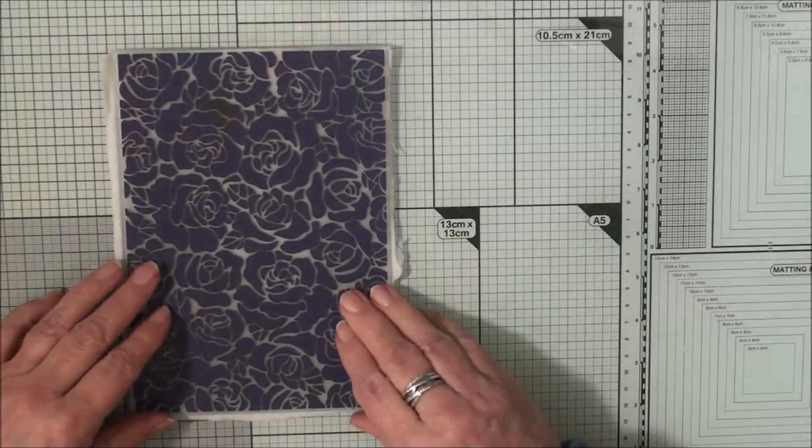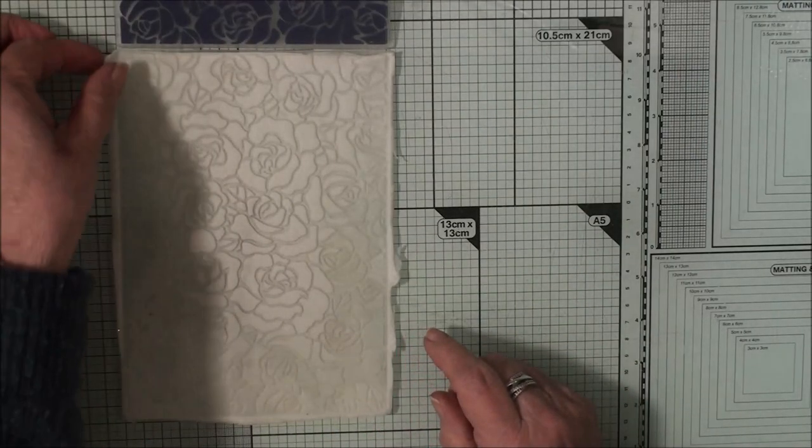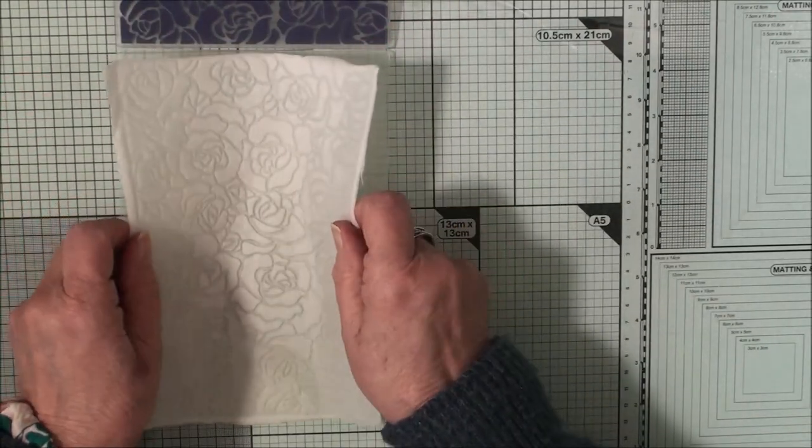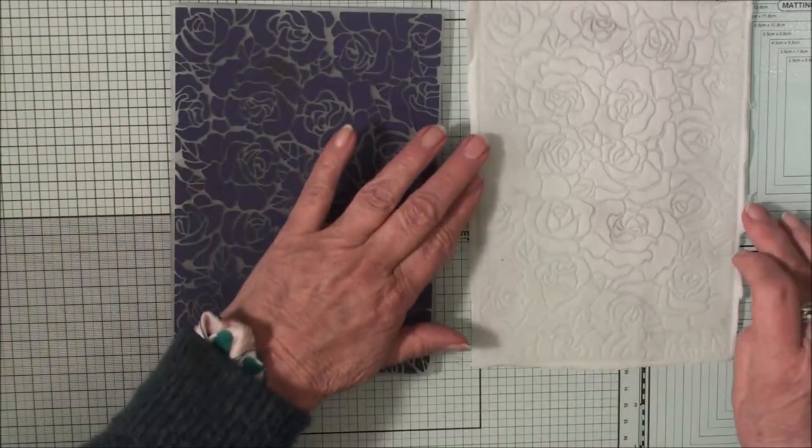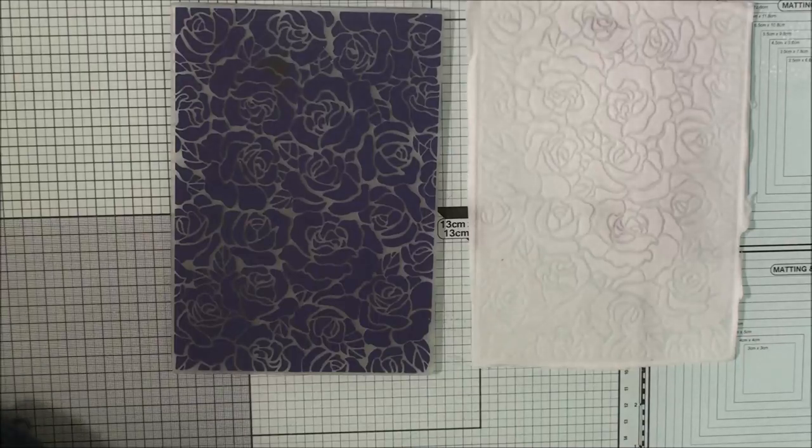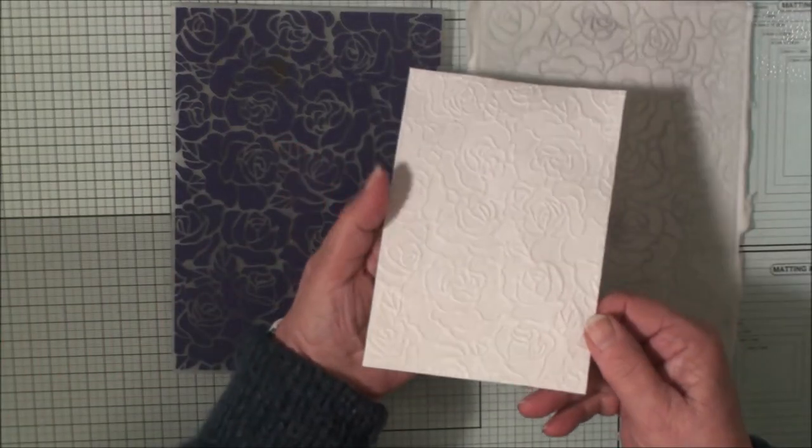So once you've had this through your machine, you can open it up and there's the pattern in your paper. Now you can either leave it in the folder to dry or you can take it out and let it dry. But either way, you need to leave that alone now until it's completely dry, and once it is dry you can trim it down and this is what you will have.